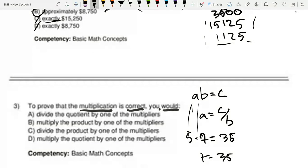So in this case, 5 would be A, 7 would be B, and 35 would be C. So this would be dividing the product because our product in this case is 35 and our multipliers are 5 and 7. So the answer is C.